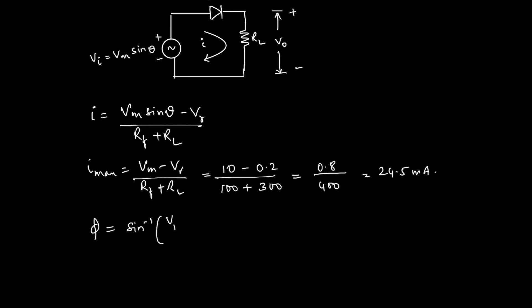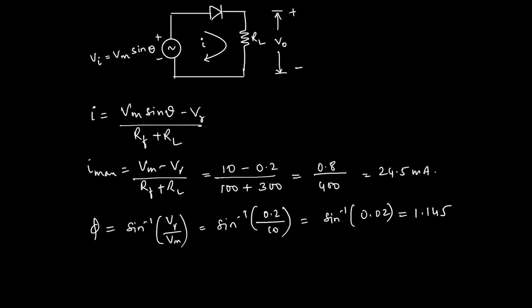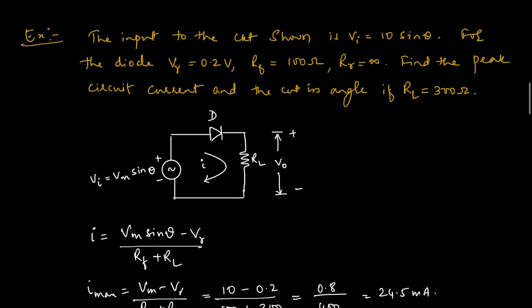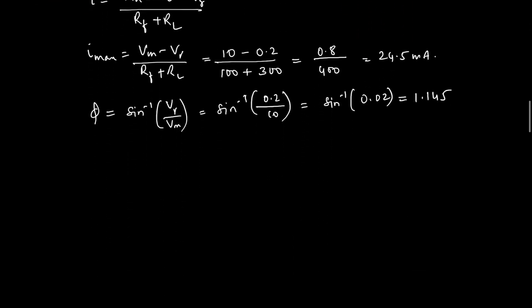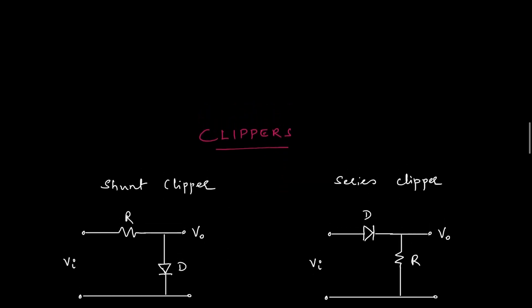The cut-in angle is: phi = sin⁻¹(V_gamma / Vm) = sin⁻¹(0.2 / 10) = sin⁻¹(0.02) = 1.145 degrees. With these two formulas, you can solve this type of circuit. Note that forward resistance is the small resistance offered when the diode is conducting, while reverse resistance is almost infinity — essentially an open circuit. Now we shall move to the topic called clippers.